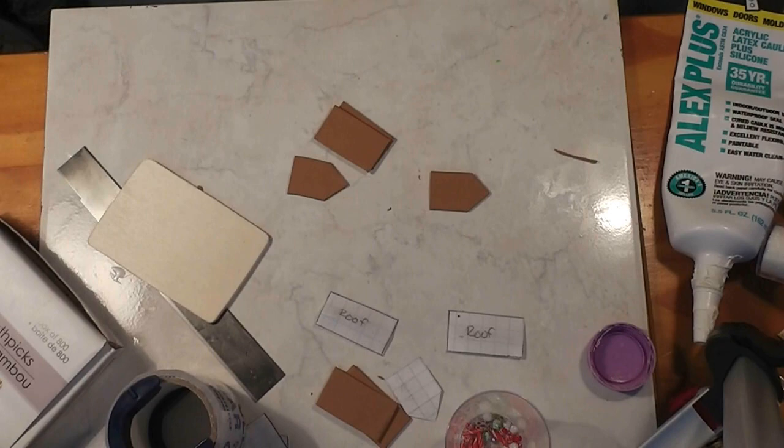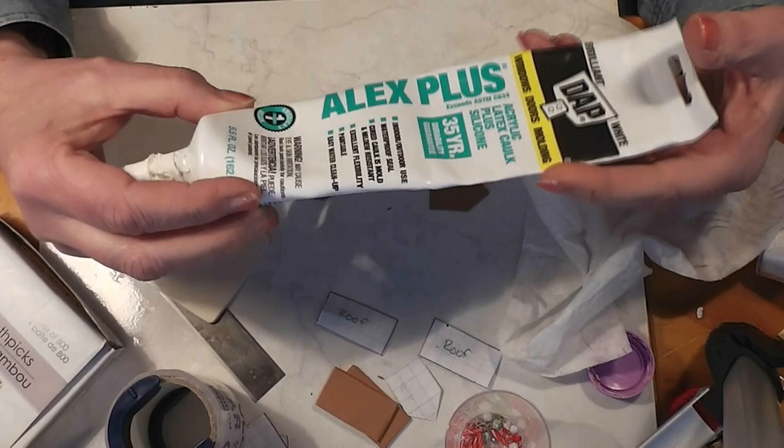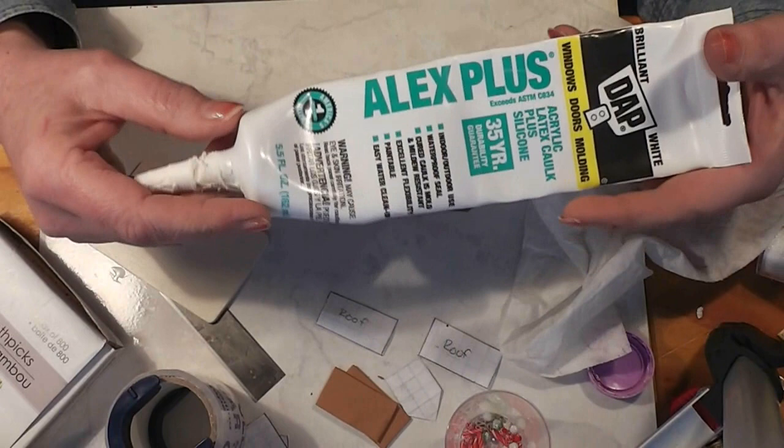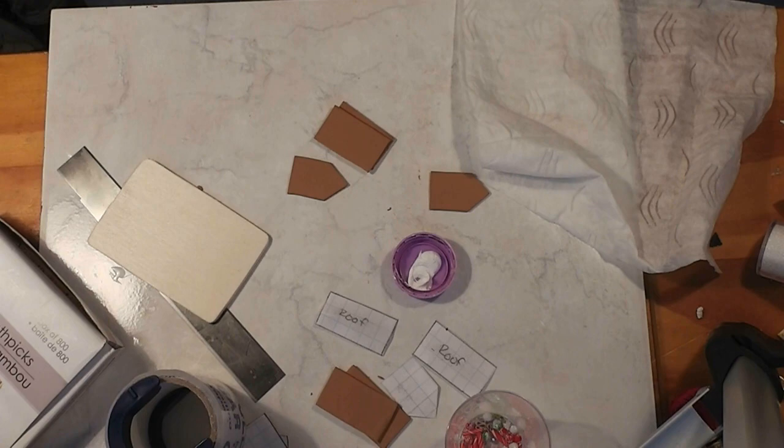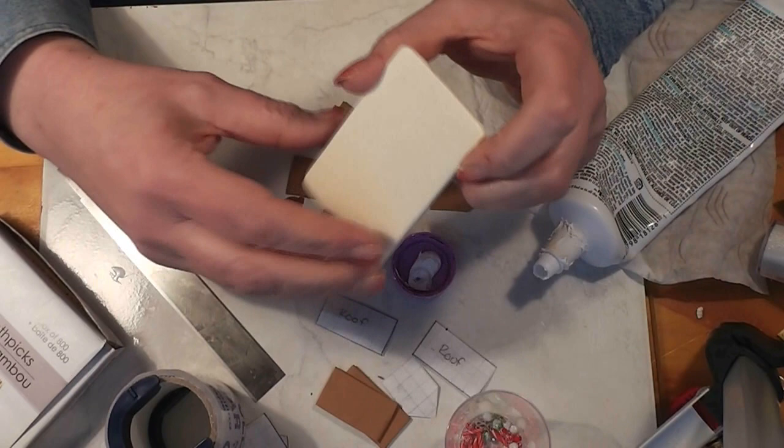Now we need a wet wipe because we are going to use latex caulking. This is what we are going to use in place of frosting. Just like in real life, we many times will put our gingerbread house together with frosting. We're going to use frosting, or in this case caulking. Put just a little bit in here. Now this is just a piece of wood, one of those wood shapes.